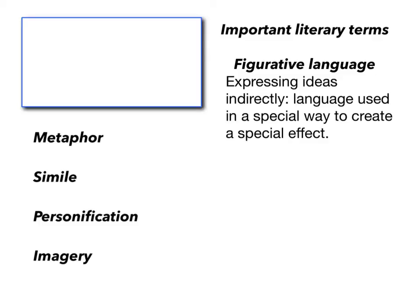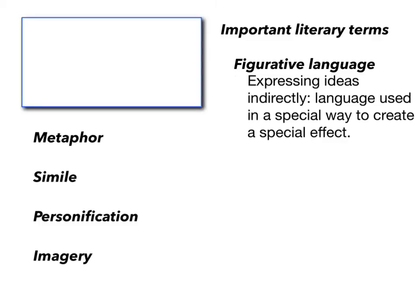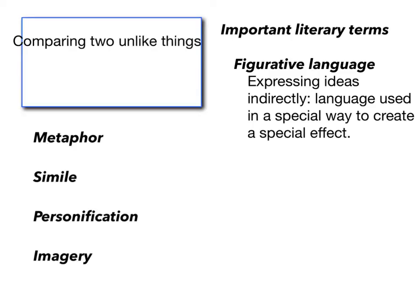So now we need to be able to define these literary terms. First up: metaphor. A metaphor is comparing two unlike things without using the word like or as.